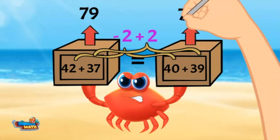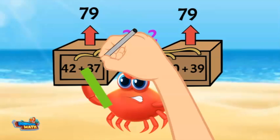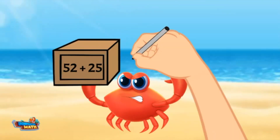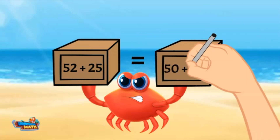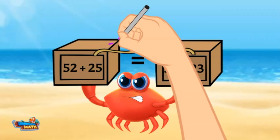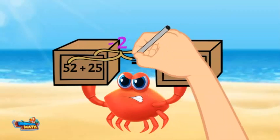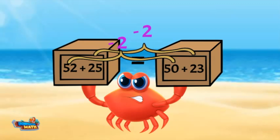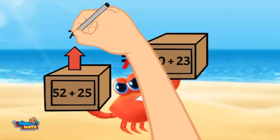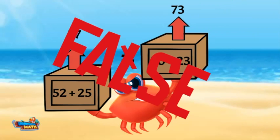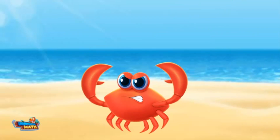The left side equals 79 and so does the right side — this equation is true! Here is another one: is 52 plus 25 equal to 50 plus 23? If I take 2 from 52 on the left side I make 50, so I would need to add 2 to 25 to make the equation equal. This equation is false — 52 plus 25 equals 77, which is larger than 50 plus 23, which equals 73.